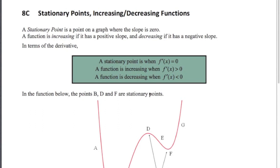A stationary point is a point on a graph where the slope is zero. A function is increasing if it has a positive slope, and it's decreasing if it has a negative slope. So if we're thinking in terms of the derivative: a stationary point is when the derivative equals zero, it's increasing when the derivative is greater than zero, and decreasing when the derivative is less than zero. Those definitions are very important.